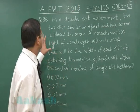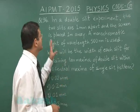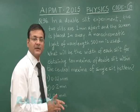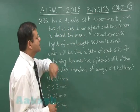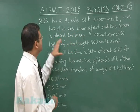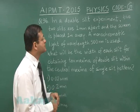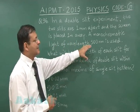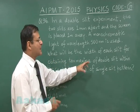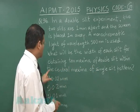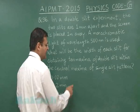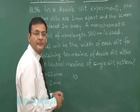Now let us move ahead to Question 96. This question is from wave optics. Here it's a mixing of interference and diffraction pattern. It says in a double slit experiment, the two slits are 1 millimeter apart and the screen is placed 1 meter away. A monochromatic light of wavelength 500 nanometer is used. What will be the width of each slit for obtaining 10 maxima of double slit within the central maxima of single slit pattern? They are demanding the width of each slit.